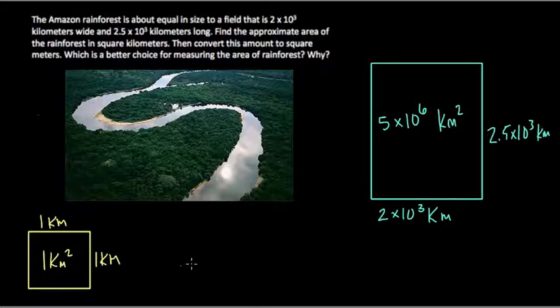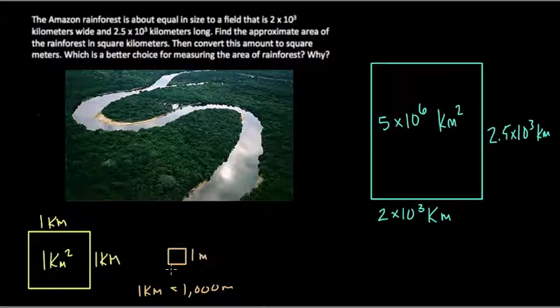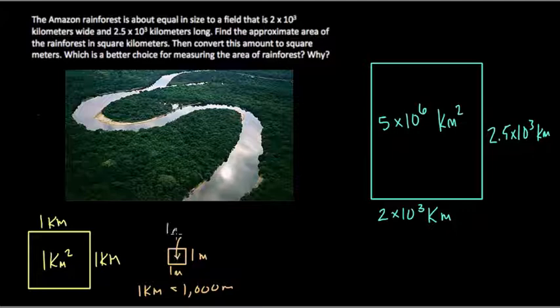But a meter squared is much, much smaller. Remember that 1 kilometer equals 1,000 meters. So what would a meter square be? Well, a meter square, if I drew it to scale, would be almost microscopic at this level. But I'll draw it a little bit smaller. This is not to scale anymore. This is just a crude representation. It would be 1 meter by 1 meter. If you multiply a meter by a meter, you get 1 meter square.